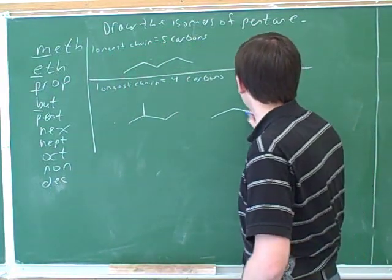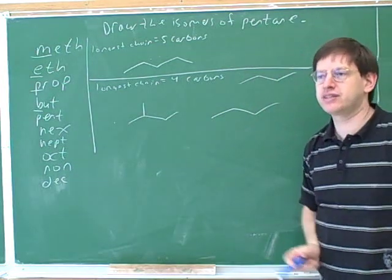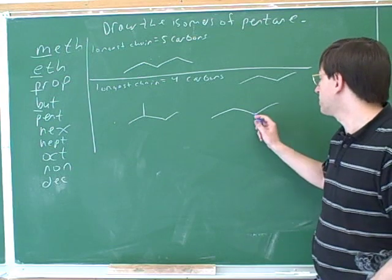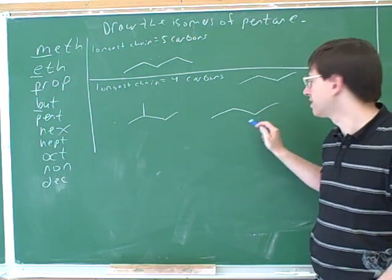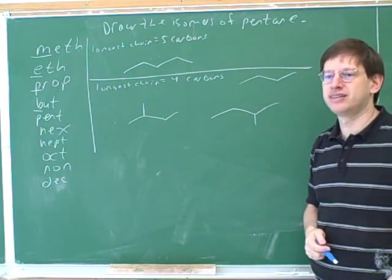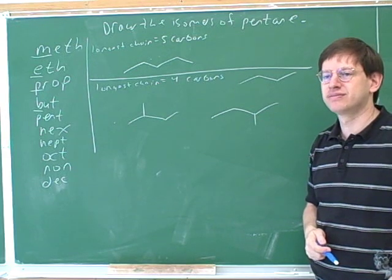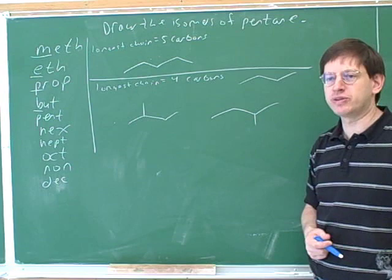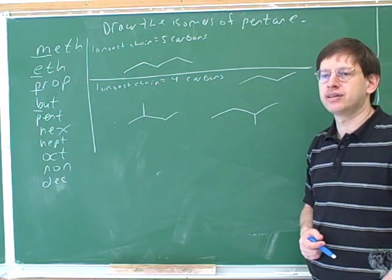But now let's draw four carbons again and ask if there's any other places that we could put that carbon. Would it give me a different isomer to put the carbon over here, like this? So how many isomers have I drawn on the board so far? How many distinct isomers? Three.